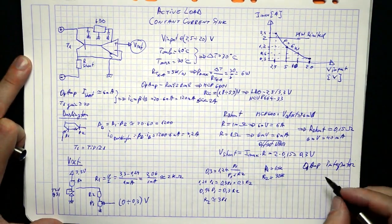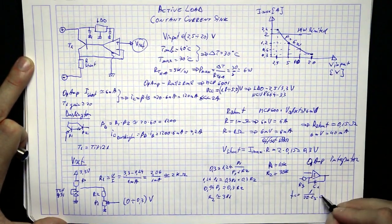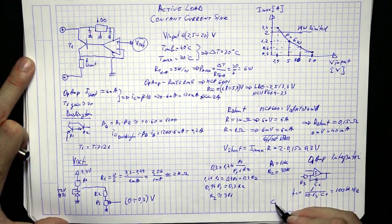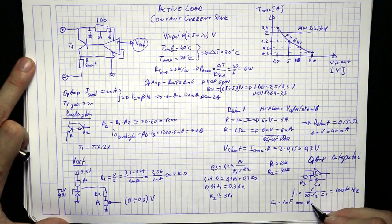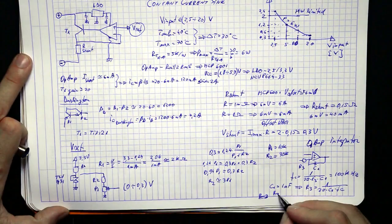Final thing to take into account is the stability of the circuit. To prevent any unwanted oscillations, the op amp gain will be limited at high frequencies. We will set a crossover frequency of 100 kHz, because more is not needed. So these two components are also added.